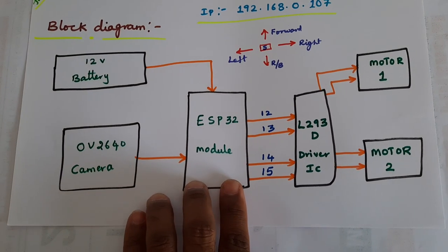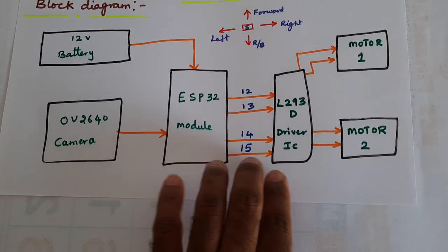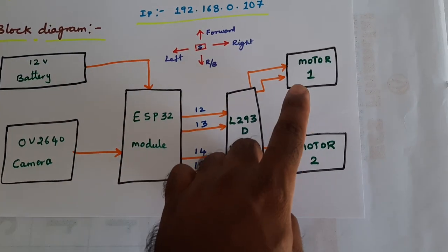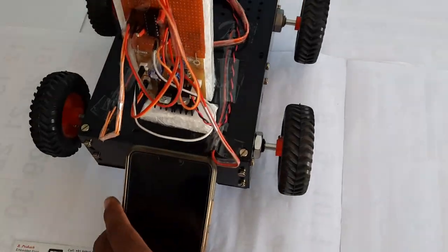As per my block diagram, ESP32 camera and L293D, the GPIO pins connect to motor 1 and motor 2. Now I am showing the output.